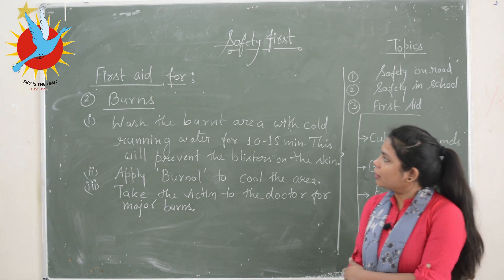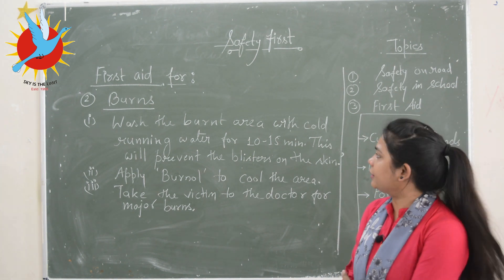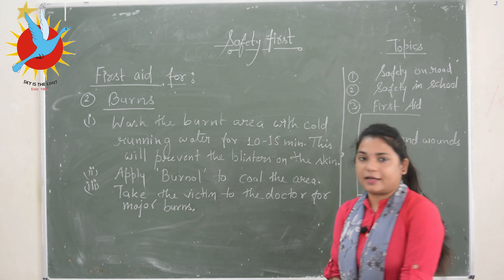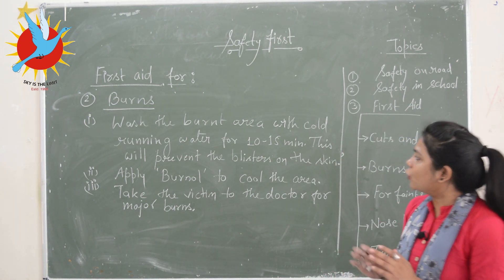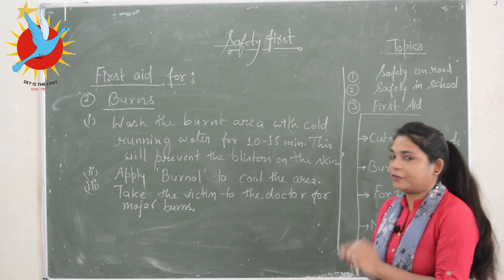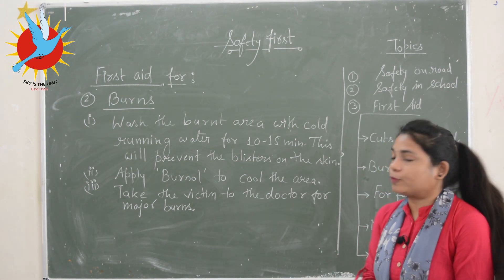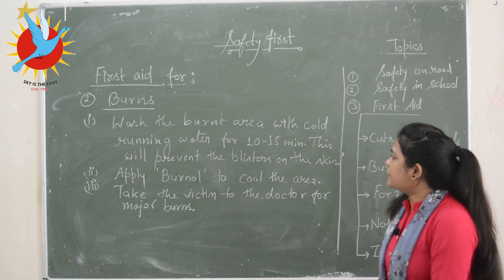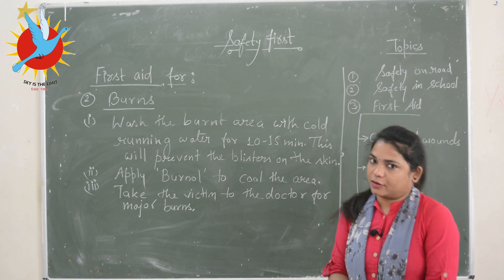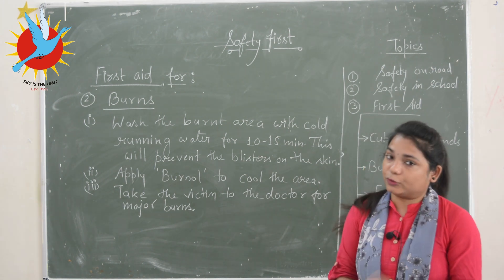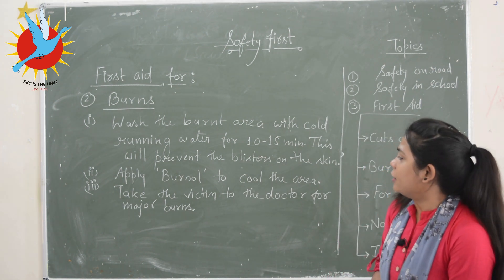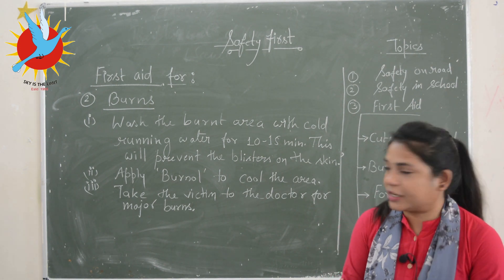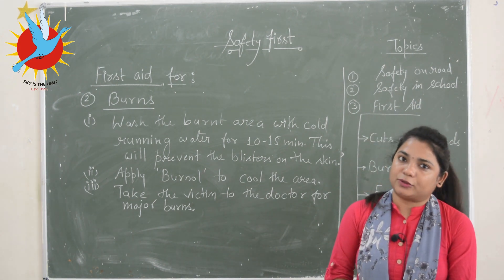The second accident is burns. First aid for burns: wash the burn area with cold running water for 10 to 15 minutes, or you can place ice cubes on the burnt area to prevent blisters on the skin. Then apply burn-all to cool down the area. If the burn is severe or major, take the victim to the doctor.